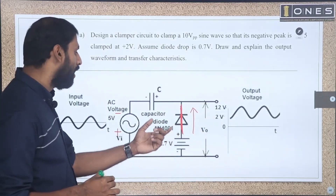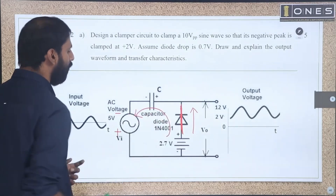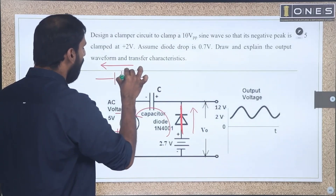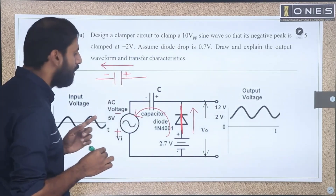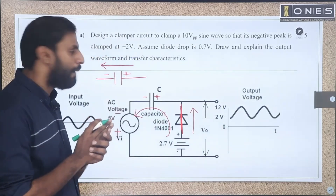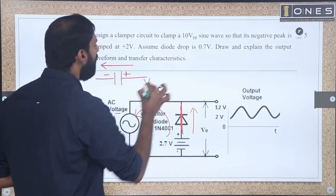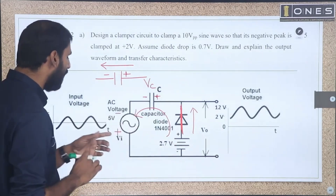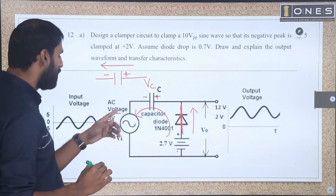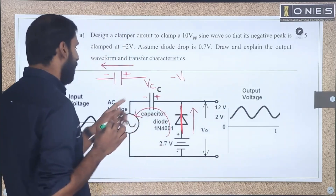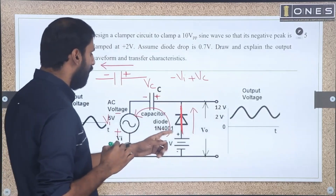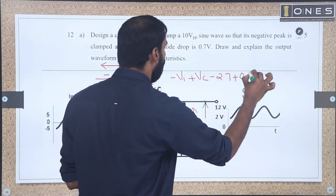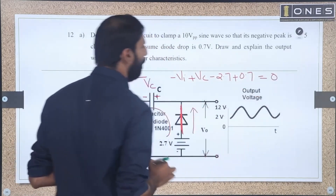There is current flow in the anti-clockwise direction. The capacitor charges with positive polarity on the right side and negative polarity on the left side. The capacitor voltage Vc represents the stored voltage. Applying KVL: minus Vi, minus Vc, then minus 2.7 plus the diode drop 0.7 equals 0.